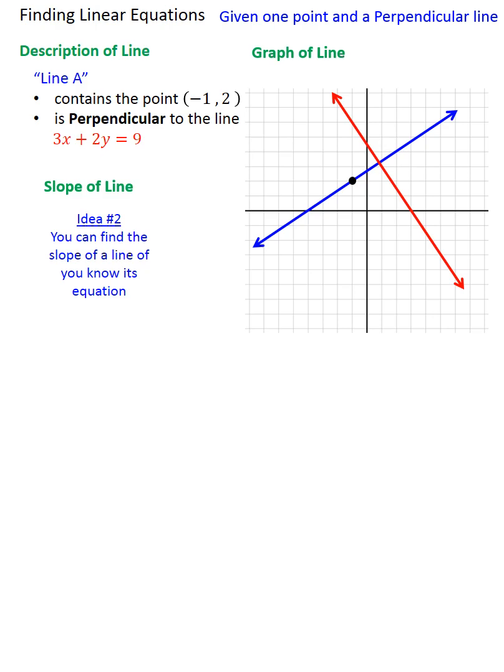So we're going to use idea number two here. That we can find the slope of a line if we know its equation. Here's the equation that we know for the perpendicular or red line. And if I can isolate y, I'll know the slope of the perpendicular line. I can then use that to find the slope of the line I want. Watch and you'll see.